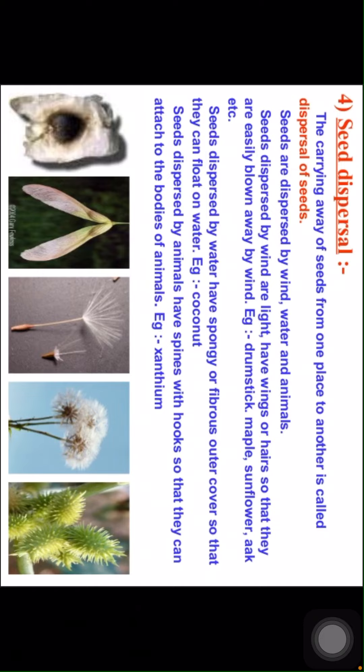Seeds dispersed by water have a spongy or fibrous outer cover so that they can float on water easily — example: coconut. Seeds dispersed by animals have spines with hooks so that they can attach to the bodies of animals — example: Xanthium.